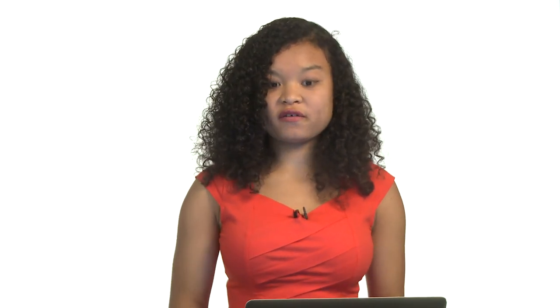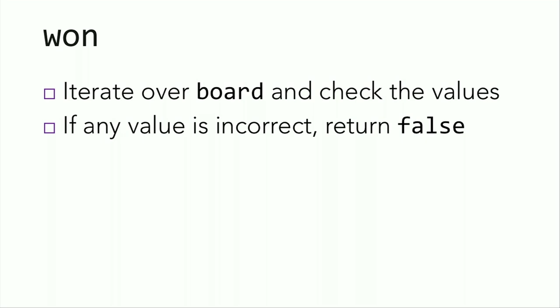So to win the game of 15, tiles have to be in increasing order with the blank tile at the bottom right corner. So how do you check whether the user has moved the board into the right orientation? Well, you'll iterate over the board and check the values to make sure that they're in the right place. To do this, you can use nested for loops just like you did in draw and in init.